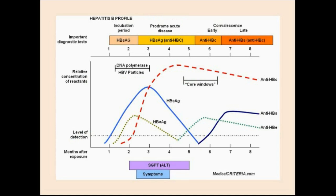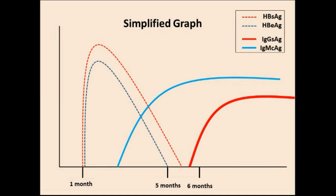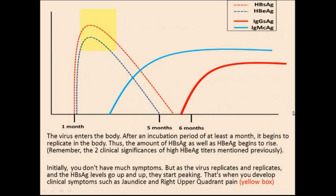This is a typical graph of hepatitis B serology. I will attempt to make a simpler version. In the simplified graph, the dotted lines represent the viral antigens — the red line is the hepatitis B surface antigen, and the blue dotted line is the hepatitis B E antigen. The thick line is the IgG produced against the surface antigen, which is our body's main response. IgGs against the surface antigen take about 6 months to develop. Initially, the virus enters the body. After an incubation period of at least one month, it begins to replicate, so the amount of hepatitis B surface antigen as well as E antigen begins to rise.